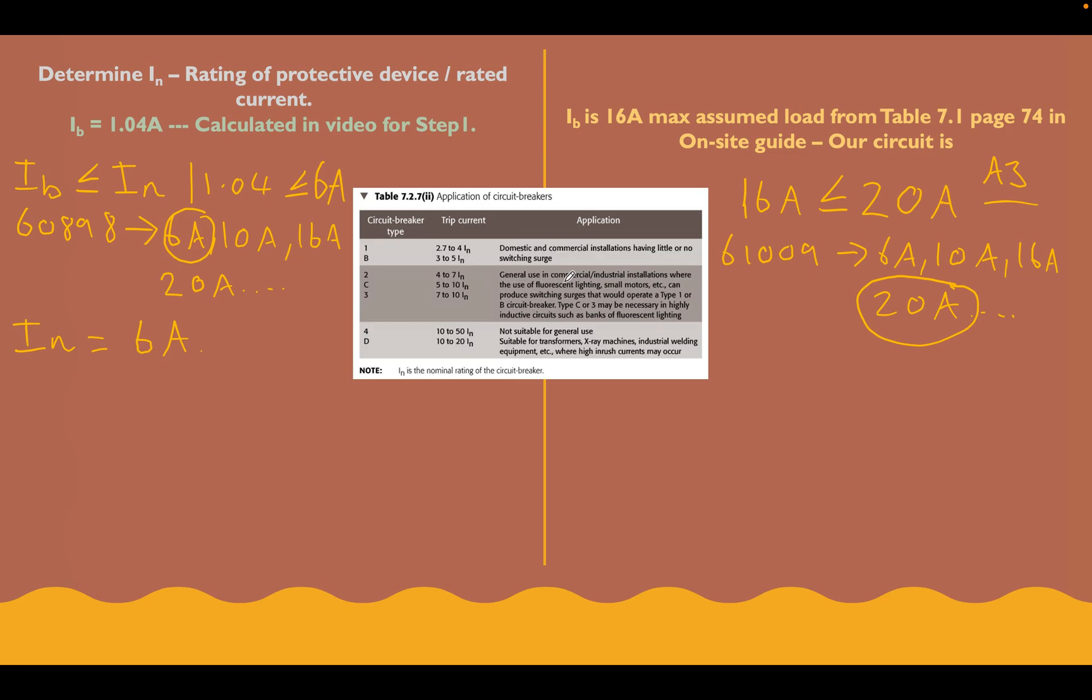What they're saying there is that these fluorescent lights or motors, when you switch them on and they first start up, there's a large current flow initially for when they first turn on. So that's why we'd select a circuit breaker like a type C, which allows for those large switching surges. A type B - in this bit where it said it'd operate a type 1 or type B, when it says operate, it means it'd trip it out essentially. So it's saying if we had a type B circuit breaker and we were supplying fluorescent lighting, there's a high chance that when we switch it on, that switching surge is going to trip this out.